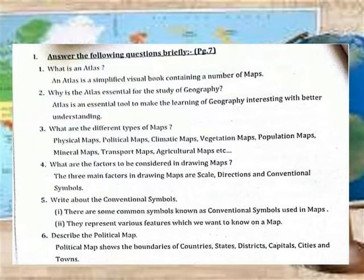What are the different types of maps? Physical maps, political maps, climatic maps, education maps, population maps, transport maps, and agricultural maps.